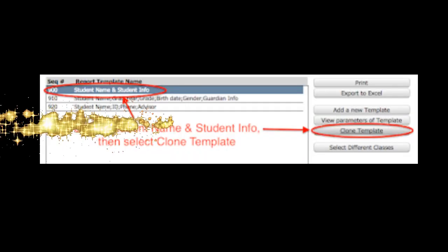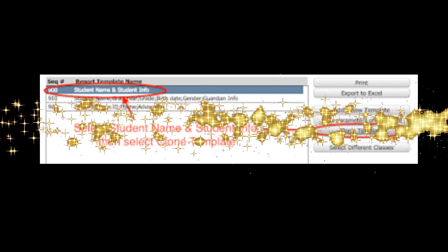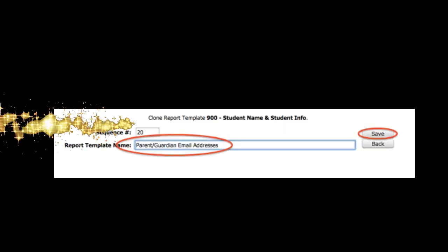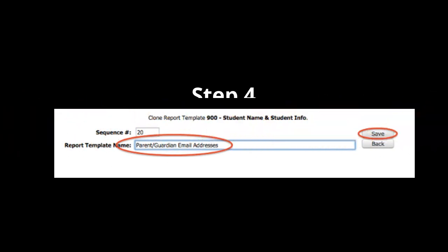Step three is to choose Student Name and Student Info, then select Clone Template. Step four is to give your new template a name, such as "Parent Guardian Email Addresses," then click Save.